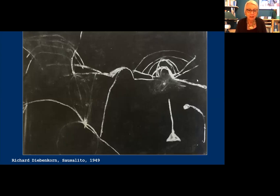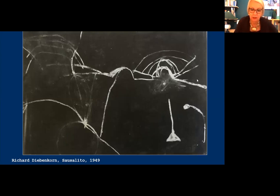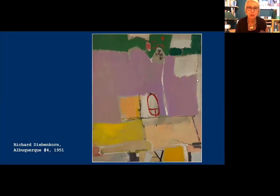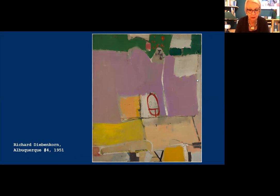In 1950, when Diebenkorn entered grad school at the University of New Mexico in Albuquerque, the first mature distinctly Diebenkorinian paintings appear, and they're intimately connected with landscape — shaped by an epiphany he felt when he first viewed the landscape from a plane. That's what organizes his pictures.